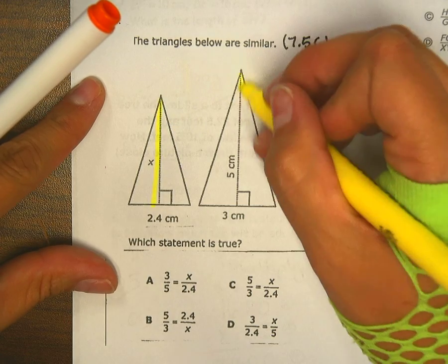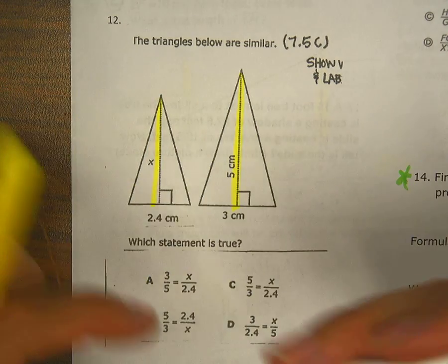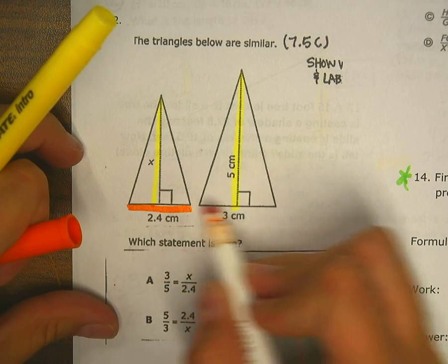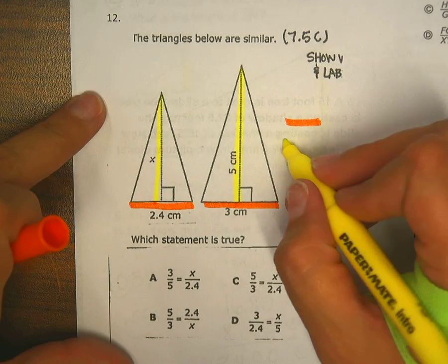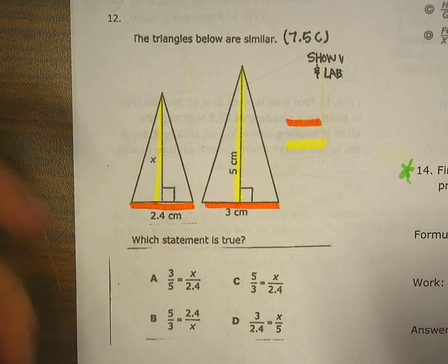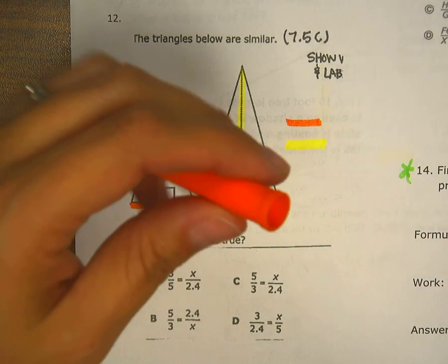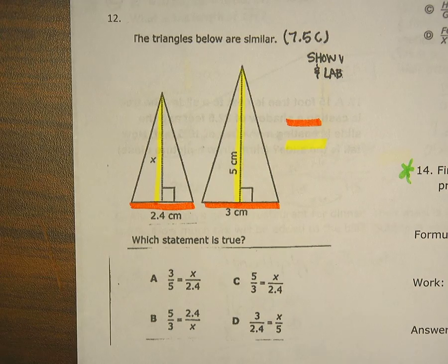I'm going to highlight the two heights, and then I'm going to color in orange the two bases. What that does is that's going to help me make my proportion. I'm ignoring these proportions that are down here. That's a strategy that I like to use so that I don't get too confused.